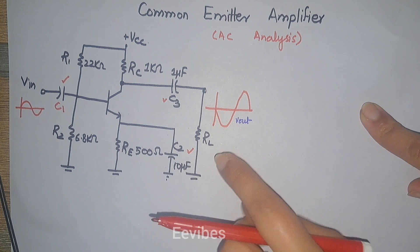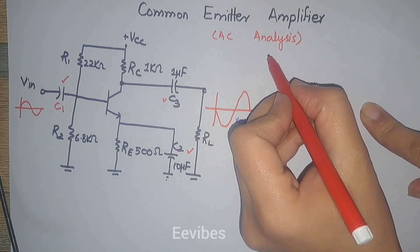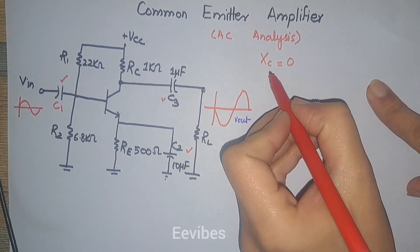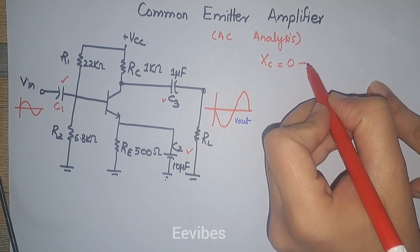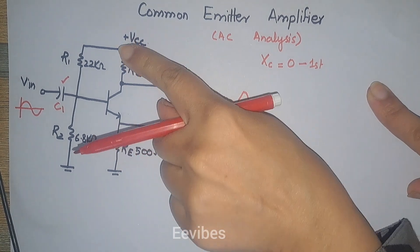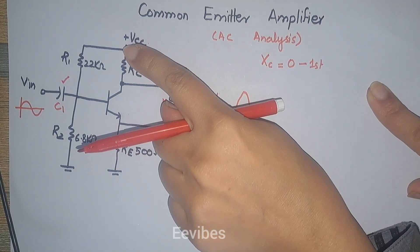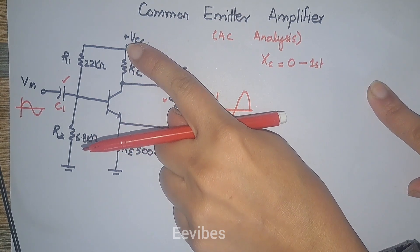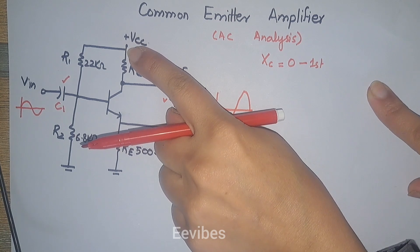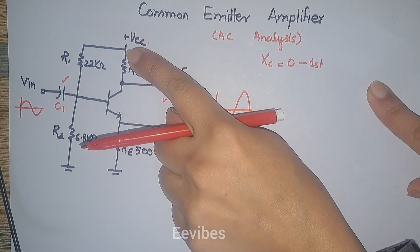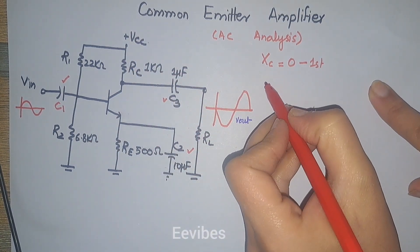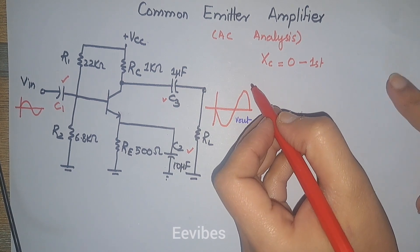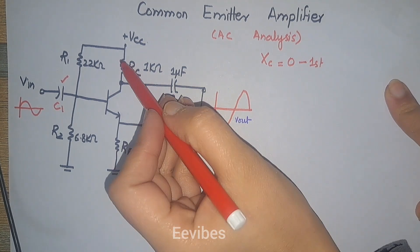For the AC analysis, all the capacitors appear as effectively short circuits because their values have been adjusted such that for the given frequency of the input signal their reactance is approximately equal to zero. Secondly, the DC source will appear as AC ground because we assume the internal resistance of the DC source is zero, meaning there will be no voltage drop across it.